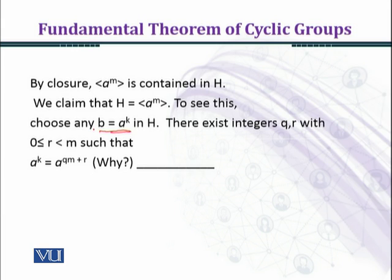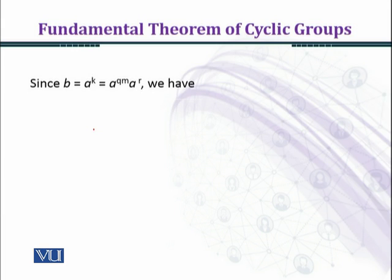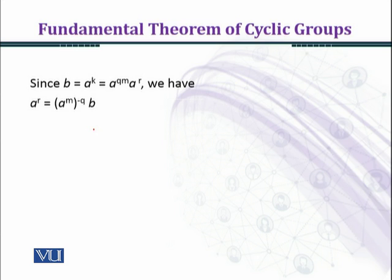Since b equals a raised to the power k, which equals a^(qm) times a raised to the power r, we have a raised to the power r equal to a raised to the power m, raised to the power minus q, times b. Because a^(qm) belongs to h and h is a subgroup of g, the inverse law is satisfied in h. Since b and a^m are in h, so is a^r.